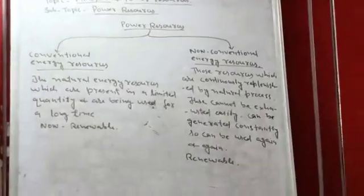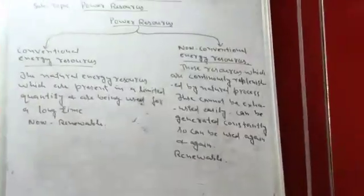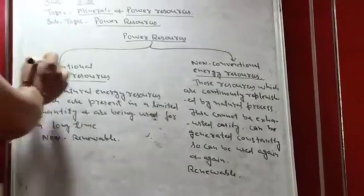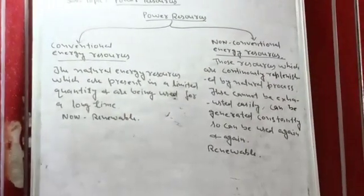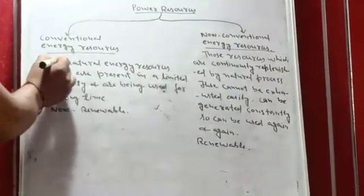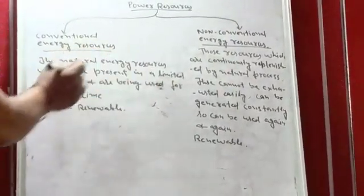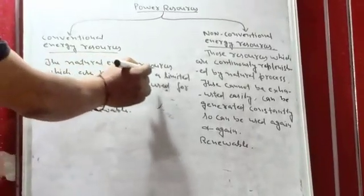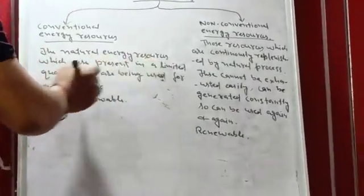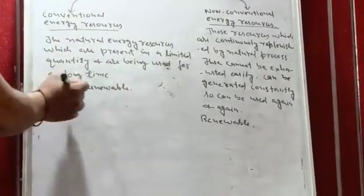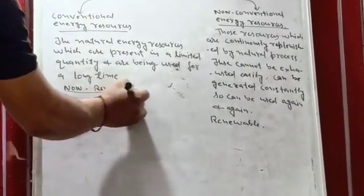Power Resources are two types: Conventional Energy Resources and Non-Conventional Energy Resources. Conventional Energy Resources, look at this definition. The natural energy resources which are present in a limited quantity and are being used for a long time. This is Non-Renewable.